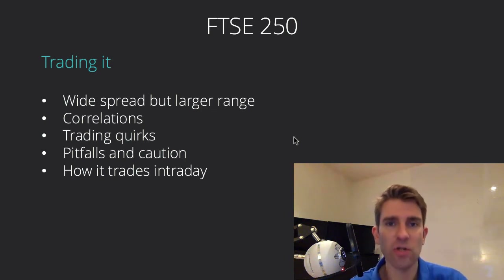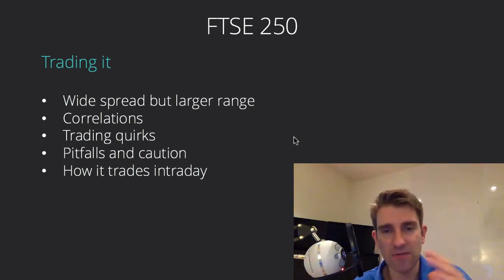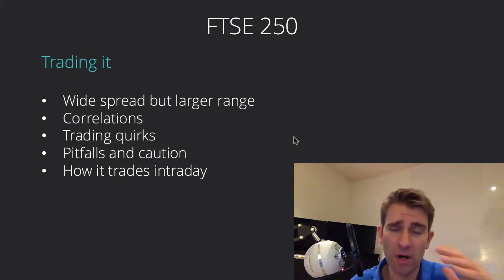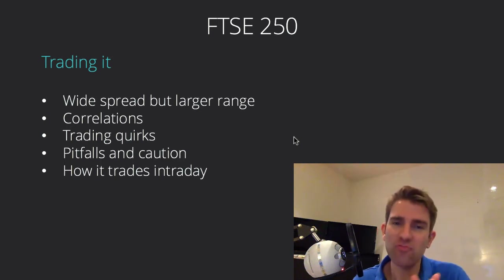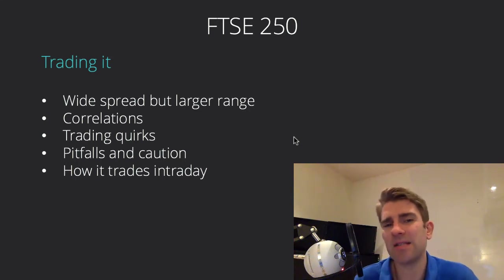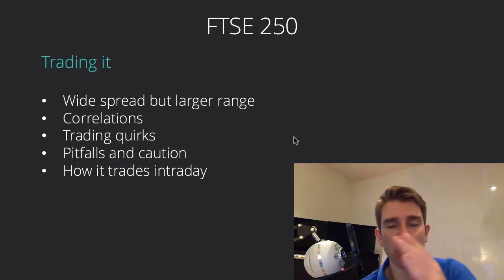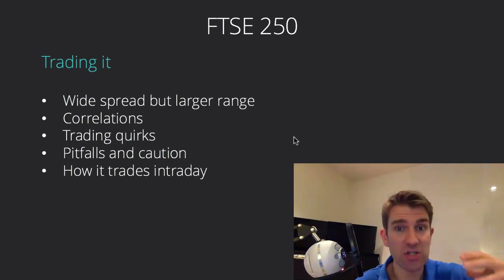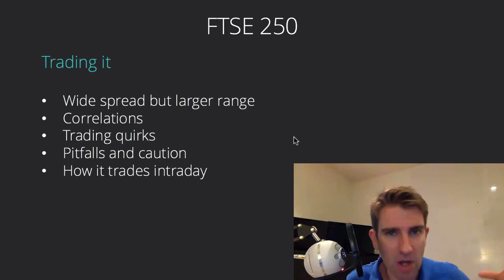There is some correlation to the FTSE 100, but interestingly that breaks quite a lot — FTSE 100 companies do a lot of business abroad, so there's a different sensitivity to sterling exchange rates. There'll be some correlation to European indices like the DAX, CAC, and Euro Stoxx, but it's really its own thing. Because there are 250 stocks, it trends as a whole wave or tide rather than being moved by one or two individual companies.